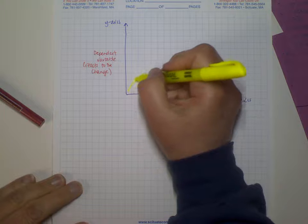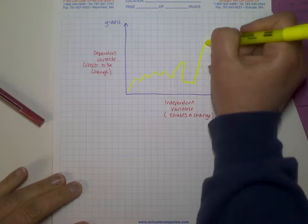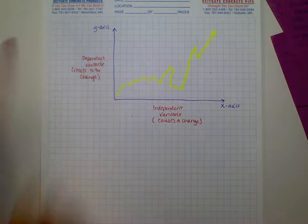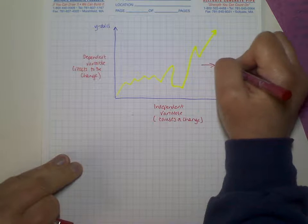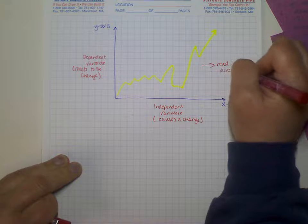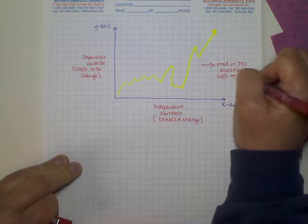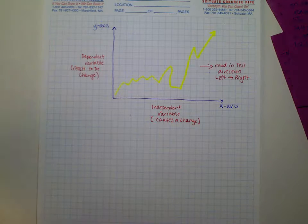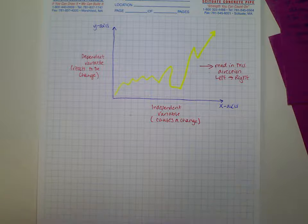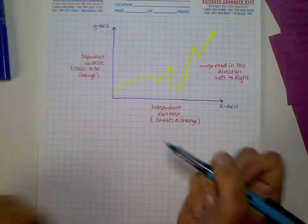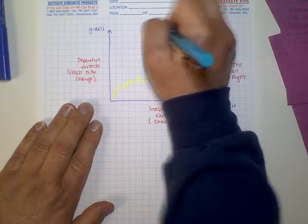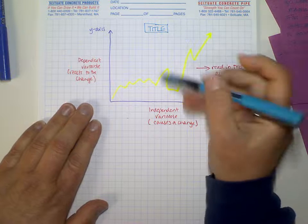We might look at a graph and see some change over time. We're always reading in this direction — from left to right, just like we read in a book. We can think of it as reading what the story is telling us. All of our graphs have a title at the top, which tells us what the graph is about — what data we're looking at.